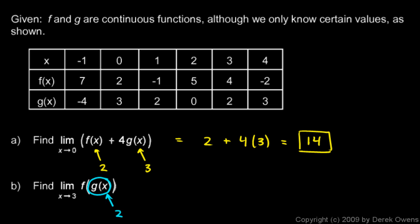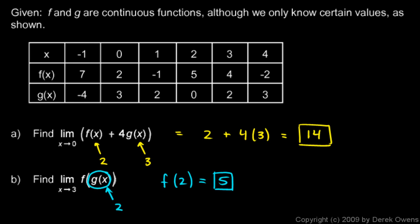So what's f of 2? We can find that in the table also. Here's 2, an x value of 2. So f of 2 is 5, and 5 is our answer. And then there's one more down here, one more question.